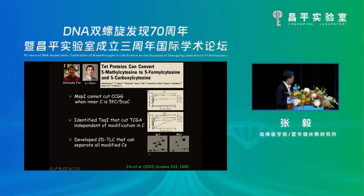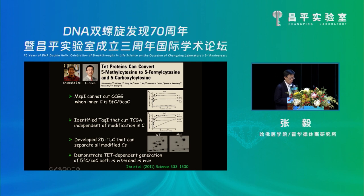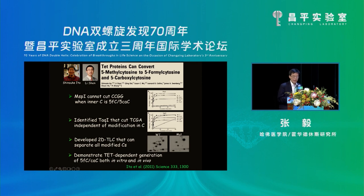Basically, TET protein in vitro can generate all three oxidation states. Importantly, we further demonstrated that in ES cells, formylcytosine and carboxylcytosine are components of the DNA. And importantly, if we knock down TET proteins, these forms accumulate — indicating that in ES cells, TET protein is responsible for generating all the oxidative states.